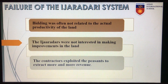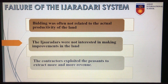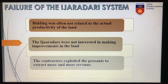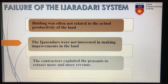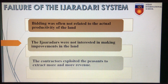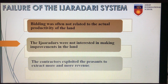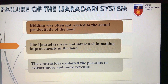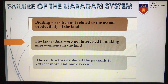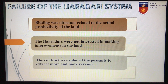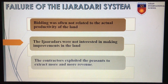The Ijadadari system failed. The main reasons were that the winning bid was often not related to the actual productivity of the land. People were also not interested in making improvements to the land as it was auctioned at regular intervals. And most importantly, the contractors kept on exploiting the peasants to extract more and more revenue.